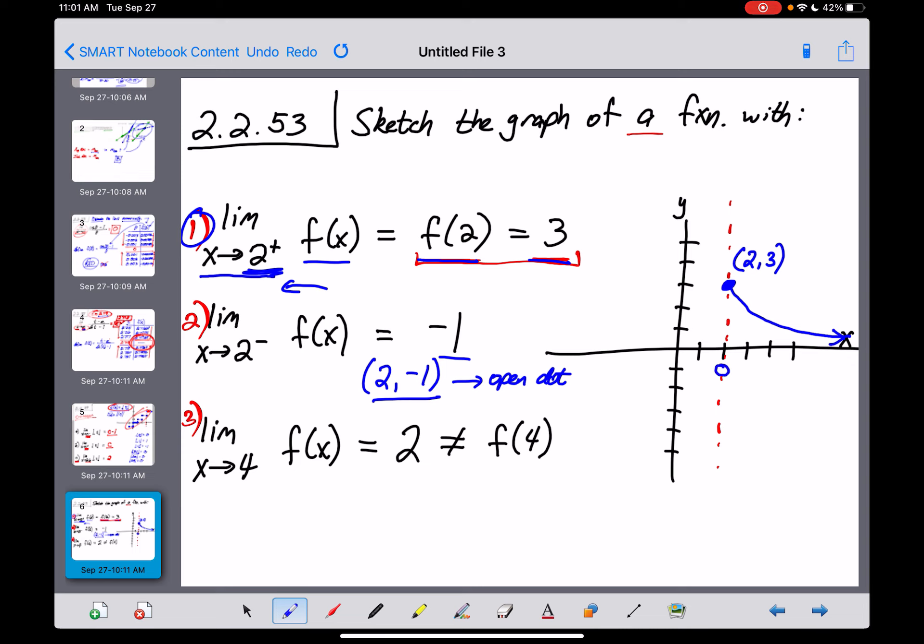I think the rest of this graph doesn't really matter. Once again, you could draw anything in the world you wanted to do here on that left side, as long as it ends up hitting that open dot right there. And what I just drew matches stipulation number 2. The limit as x approaches 2 from the left of that function is negative 1.